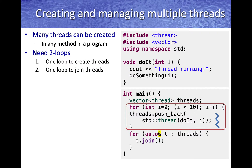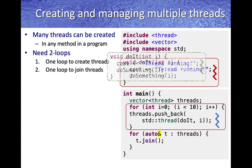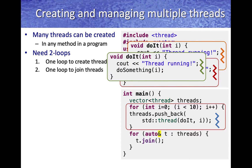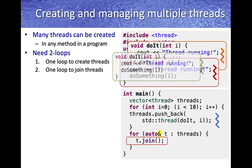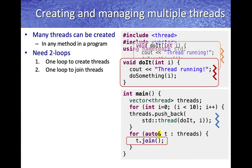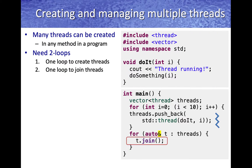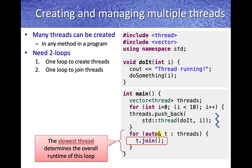Each iteration of this for loop, as it runs, starts creating threads and these threads start running asynchronously. Then we have another loop that waits for these threads to finish, and as these threads finish, they join in the main thread. Keep in mind the slowest thread determines the overall runtime of this loop and the overall runtime of this program.